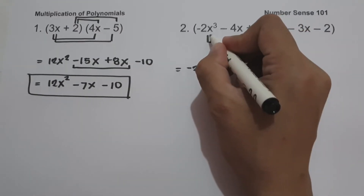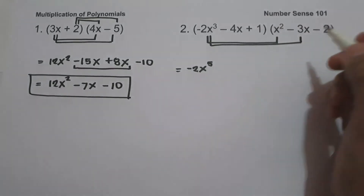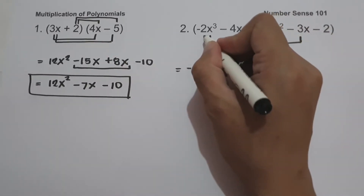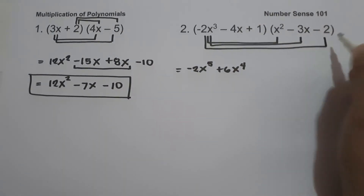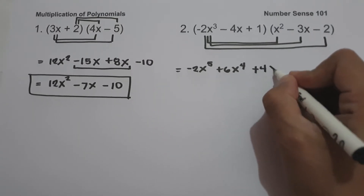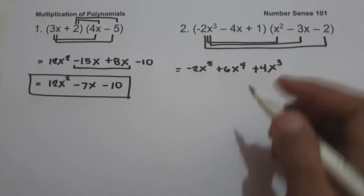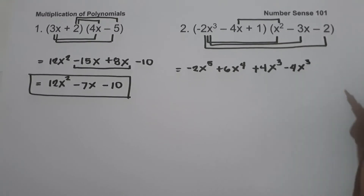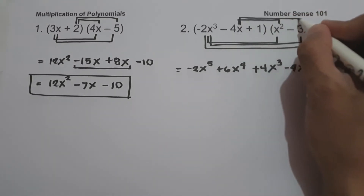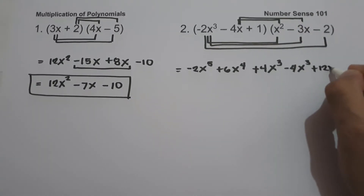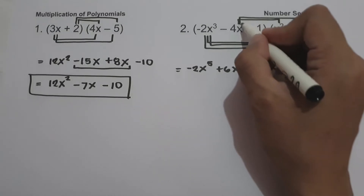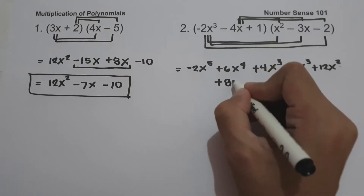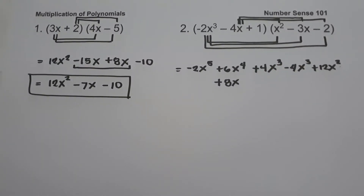Then negative 2x cubed multiplied by negative 3x is positive 6x raised to 4. Negative 2x cubed multiplied by negative 2 is positive 4x cubed. Then negative 4x multiplied by x squared is negative 4x cubed. Negative 4x multiplied by negative 3x is positive 12x squared. Negative 4x multiplied by negative 2 is positive 8x.